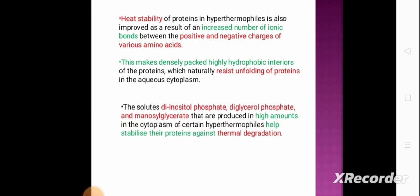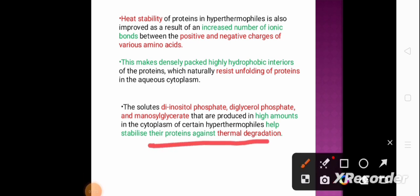The next molecular adaptation involves solutes. Solutes such as di-inositol phosphate, diglyceryl phosphate, and mannosylglycerate are produced in high amounts in the cytoplasm of certain hyperthermophiles and help to stabilize their proteins against thermal degradation.